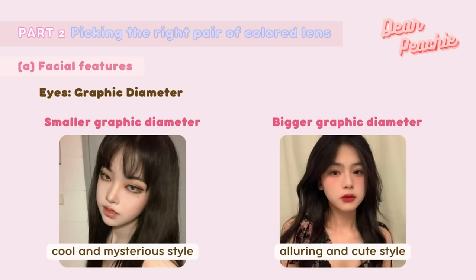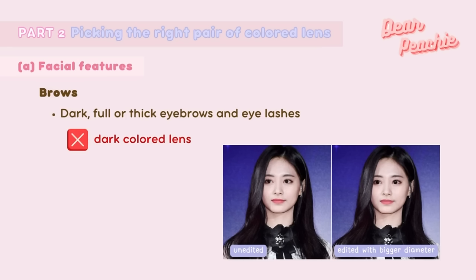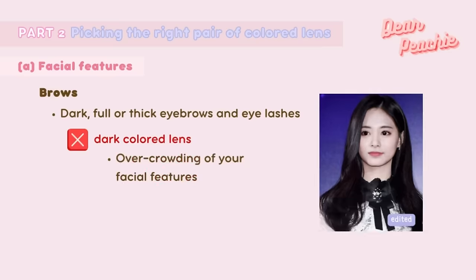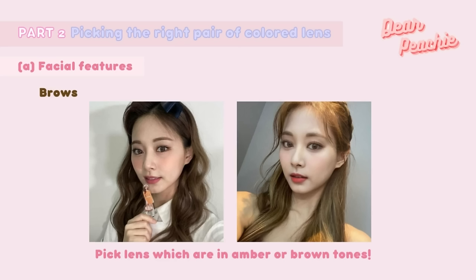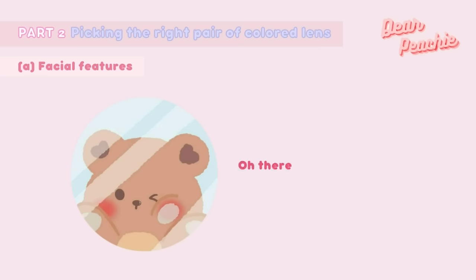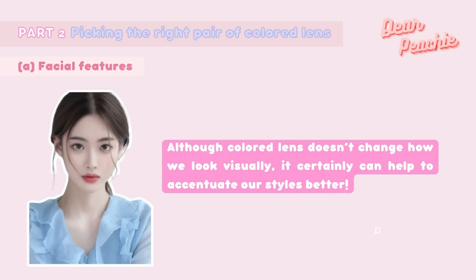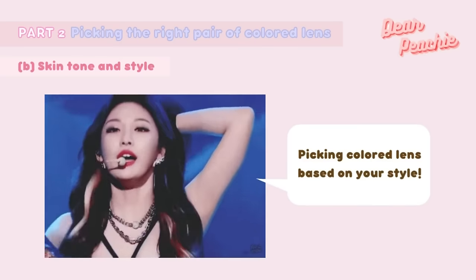Remember, it's not always better to choose the largest graphic diameter — choose according to your personal style. Some prefer smaller graphic diameters for a cool, mysterious look, while others prefer bigger diameters for an alluring, cute style. Own your style and rock it! Also, your brow color can affect your choice — if you have dark, full, or thick eyebrows and eyelashes, avoid dark colored lenses with wide graphic diameters as they can create a visually overcrowded look. Instead, try amber or brown tones to balance the intensity of your brows and lashes.